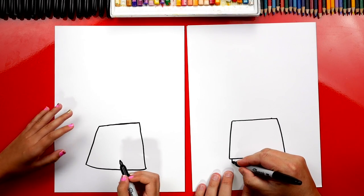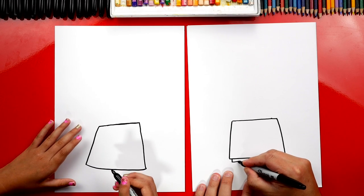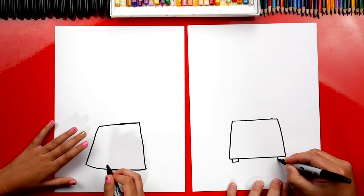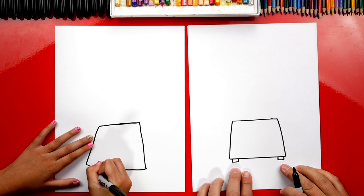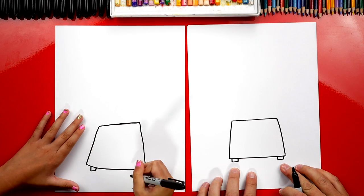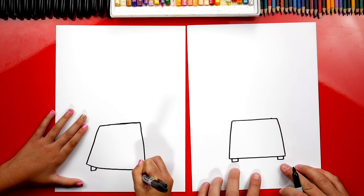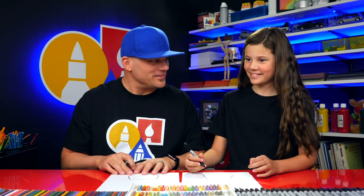Let's add little feet on the bottom. I'm gonna draw a small rectangle shape on the left and a small rectangle shape that matches on the right. So it doesn't slip away while you're blending. Yeah you don't want it to fall off the table. Oh no.